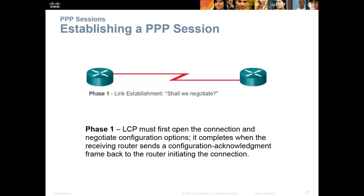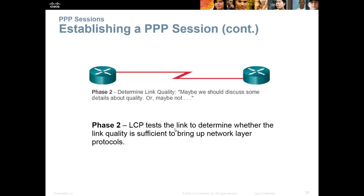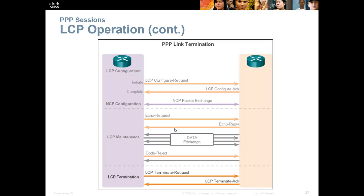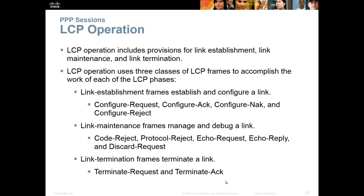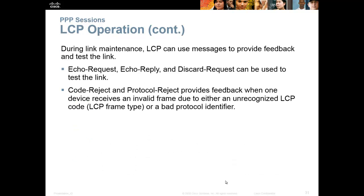Advantages of PPP: it's not proprietary, and it has extra features not available in HDLC, such as authentication. For the PPP session: first we do a handshake — I initiate the conversation, you acknowledge. The LCP establishes the link, we exchange information to confirm protocols, send an echo request and echo reply to make sure everything worked, then exchange data. When we're done, we send a terminate request and the link goes down. The link comes up and goes down as you use it.